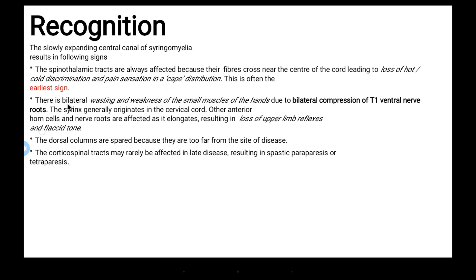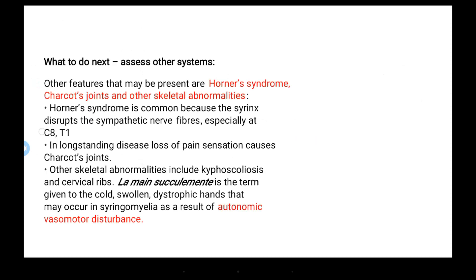There is bilateral wasting and weakness of the small muscles of the hand, due to bilateral compression of T1 ventral nerve roots. Dorsal columns are spared because they are too far from the site of disease. The corticospinal tracts may rarely be affected in late disease, resulting in spastic paraparesis or tetraparesis.